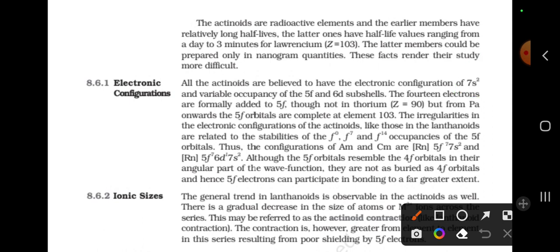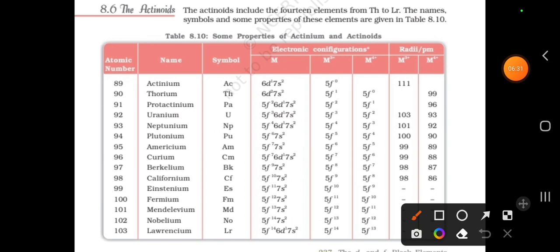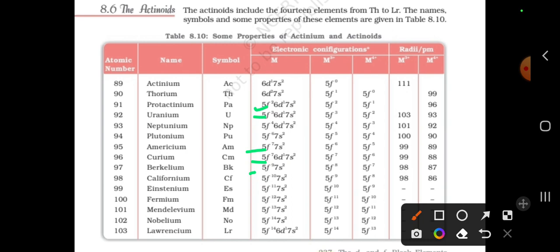The 14 electrons are formally added to 5F, though not in thorium, but from PA (protactinium) onwards the 5F orbitals are filled up to element 103. So in thorium no electron is added to 5F; from protactinium, electrons fill 5F1, 5F2, 5F3, 5F4, then there is 6D, and so on — with variable occupancy — through 5F7, 5F9, 5F10, 5F11, 5F12, 5F13, 5F14. The 14 electrons are complete at element 103, with some elements also showing 6D electrons.